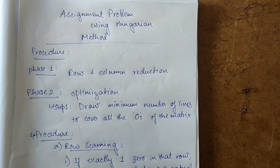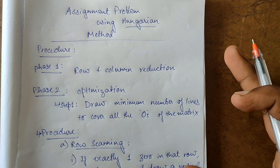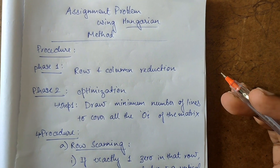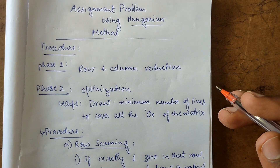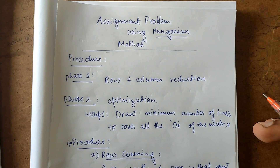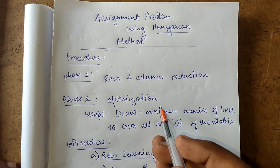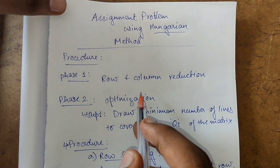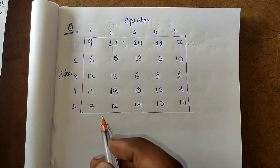Welcome back guys, I am Shashi and this video is about the assignment problem using the Hungarian method. It has some set of instructions which we need to follow to solve the problem, and it is a bit lengthy. But if you remember the steps it would be quite easy. This process mainly has two phases: phase one is row and column reduction, and phase two is optimization. Let's see the operator assignment problem with a sample question.